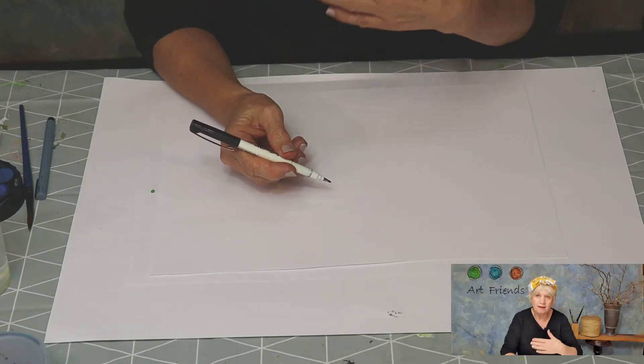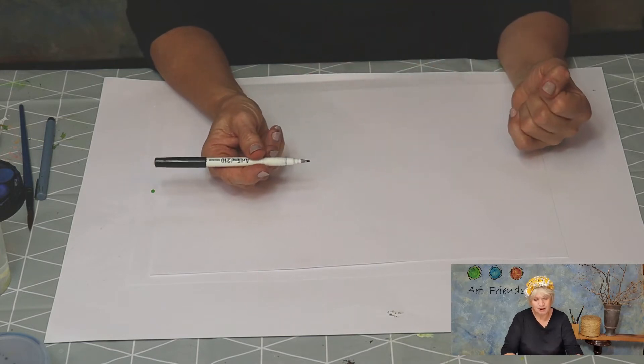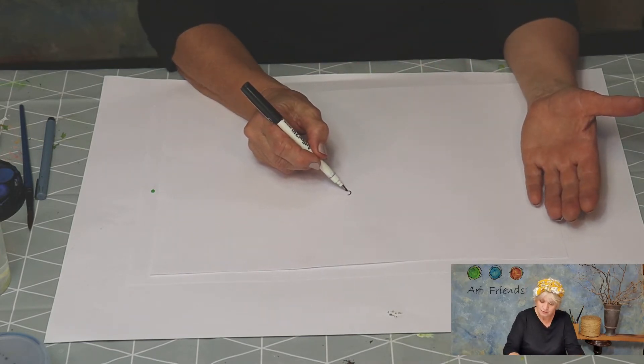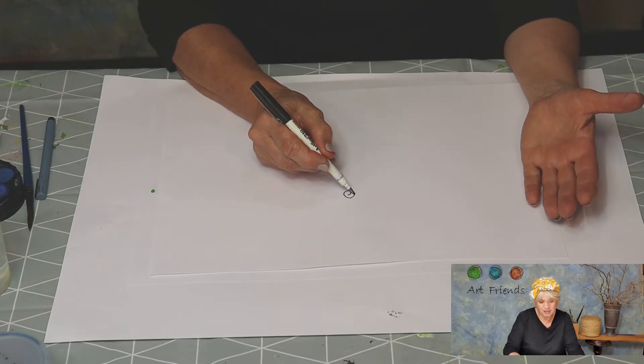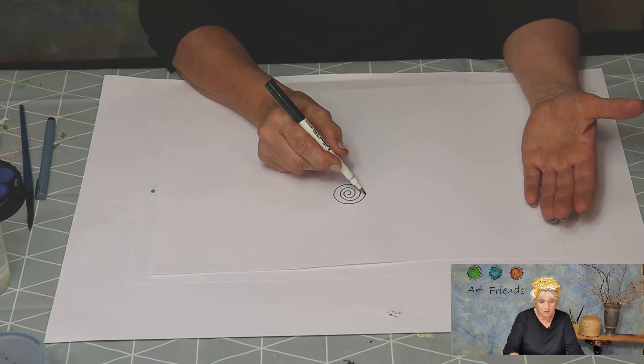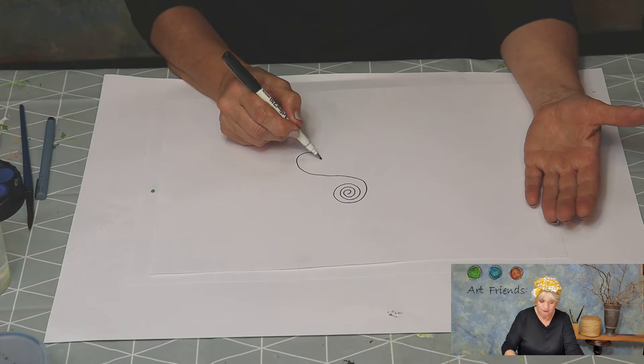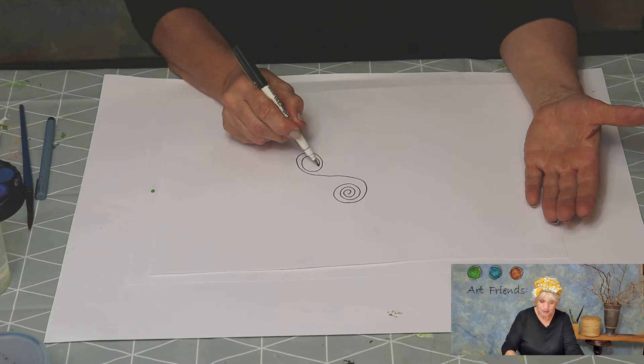Now, we talked about that lovely flow that spirals could give us, so we're going to start. I want you just to find a spot on your page and just do the spiral. Without taking your pen off your page, find another space and do another one.